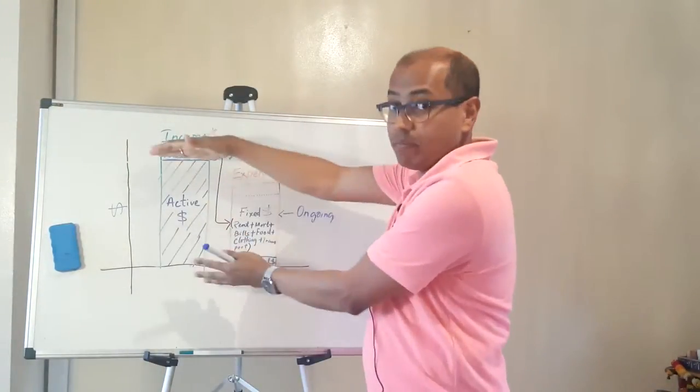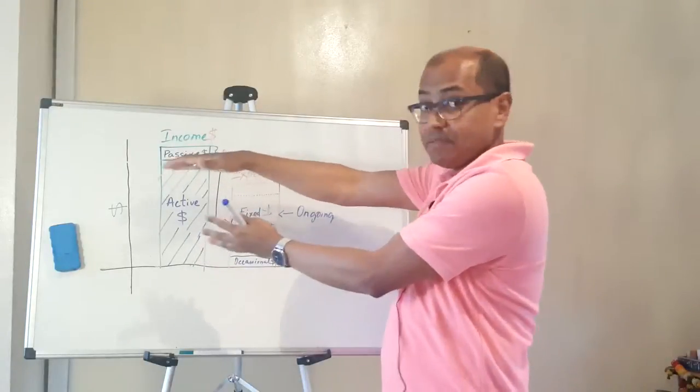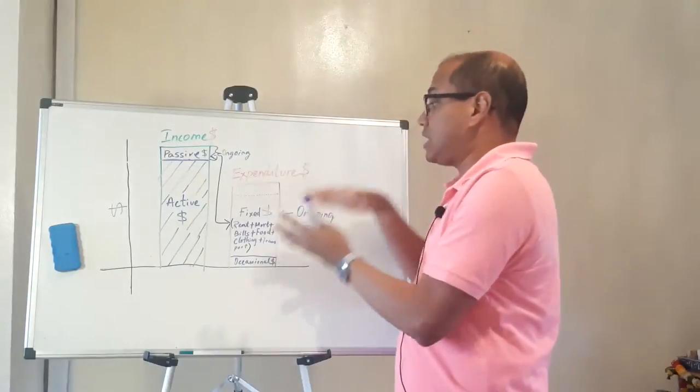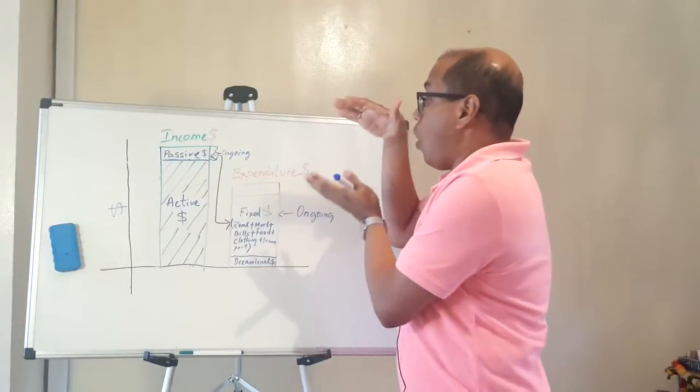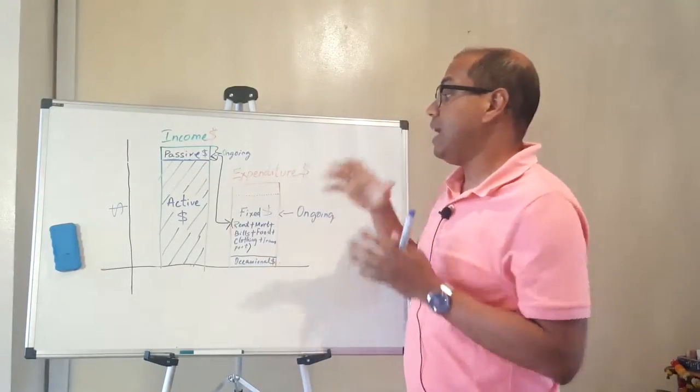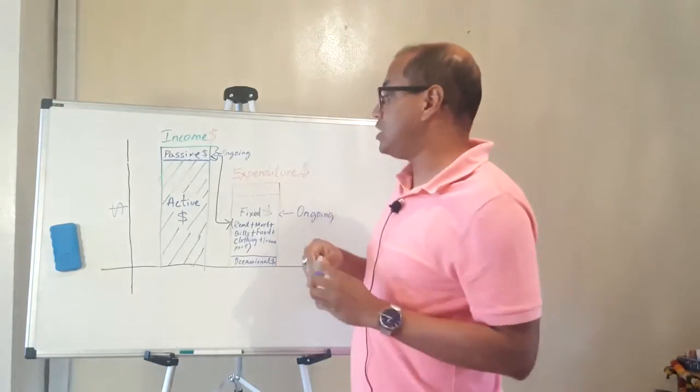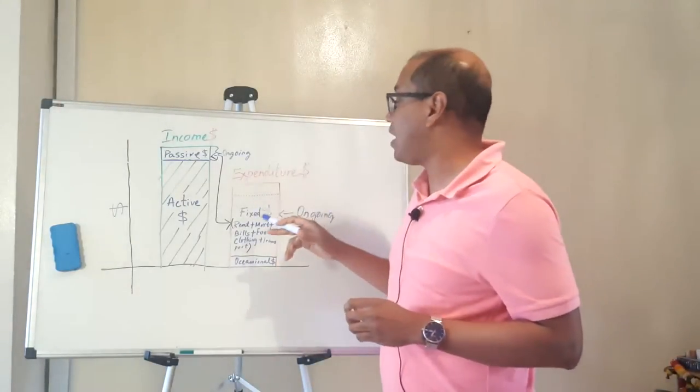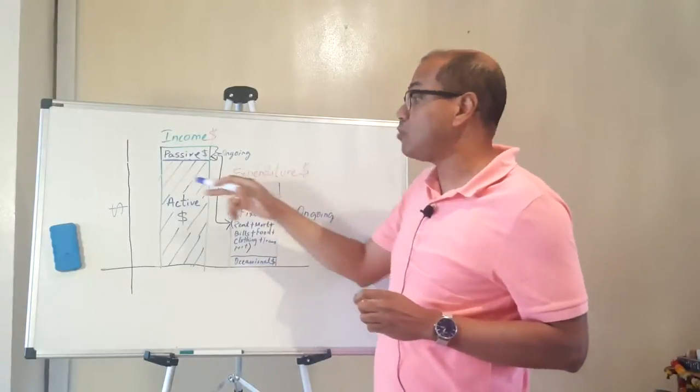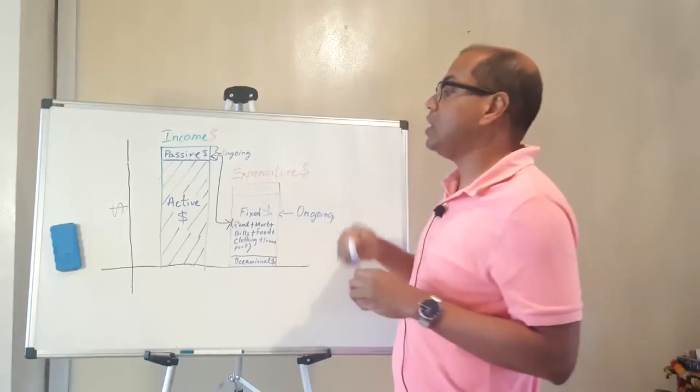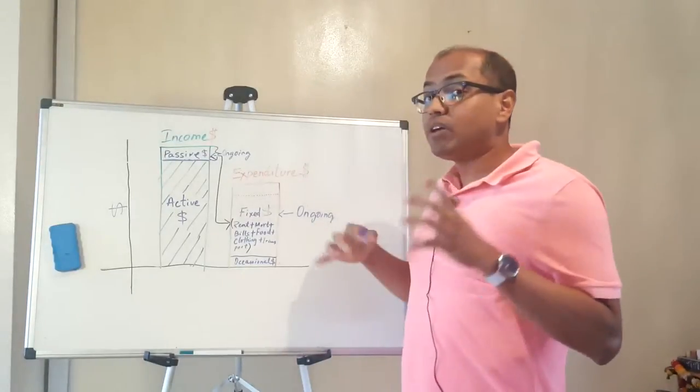If you see here in the income side, active income is quite big and in your expenditure, ongoing expenditure is the biggest one. That means as long as you are paying your ongoing expenditure out of your active income, you are financially vulnerable.